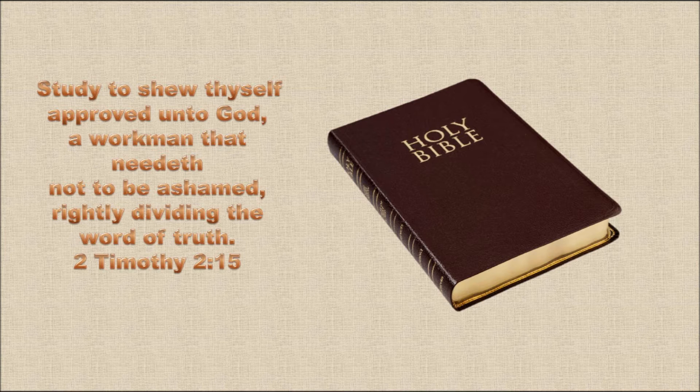At the time of Christ, there were many Jesuses, but there was only one Christ. Many people were called Jesus, just like there are many Johns today — John wrote five books of the Bible: the Gospel of John, 1, 2, and 3 John, and the Book of Revelation. Jesus is the Greek form of the Hebrew word Joshua, and both of them mean Jehovah our Savior.